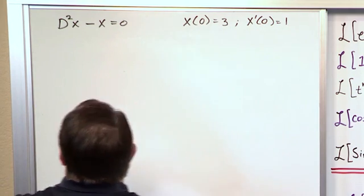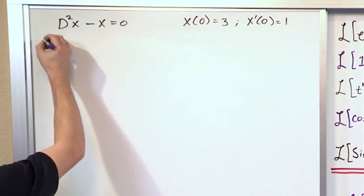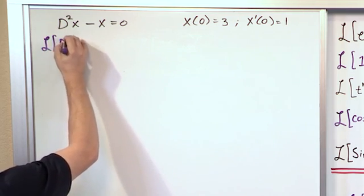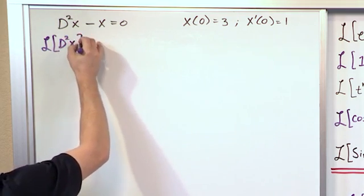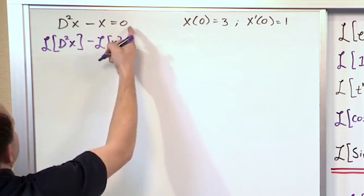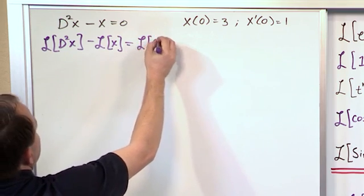What we want to do is apply the Laplace Transform to both sides of this differential equation, so we'll write down Laplace Transform of d²x minus the Laplace Transform of x and we'll just say Laplace transform of 0.